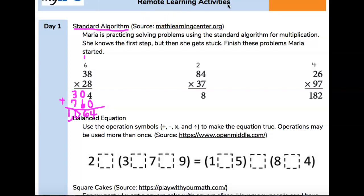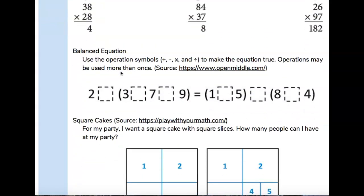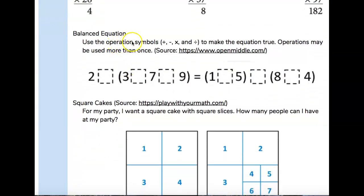And I'm going to move up my page here. All righty. Let's see here. Balanced equation. Use the operation symbols. All right? Here's your math operations. When you hear what operation do you use, that means one of these symbols. When you hear the word operation. So you're either going to add, subtract, multiply, and divide. That is operations in math. So use the operation symbols to make the equation true. Operations may be used more than once.